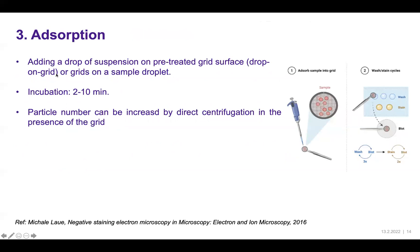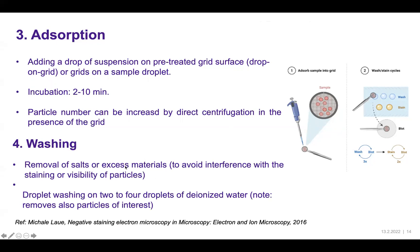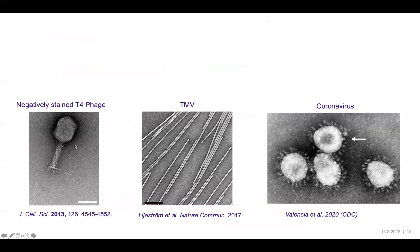Finally, you adsorb your specimen or object of interest as shown in the video, or incubate for longer if necessary. If the sample is extremely dilute, you can centrifuge the grid in an Eppendorf tube so particles settle on the grid. Then wash two to four times using deionized water or buffer to avoid any damage to the sample.